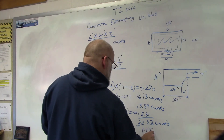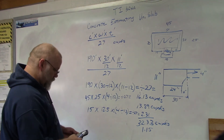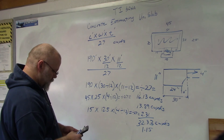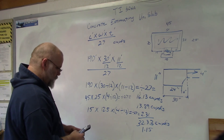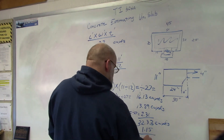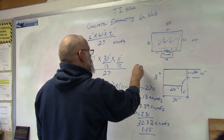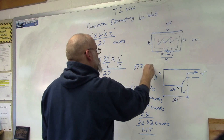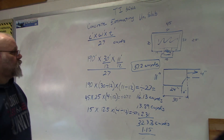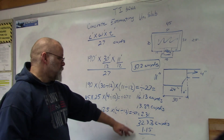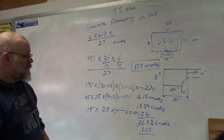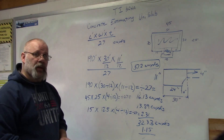Let's use 1.15 — so 15% for waste. 32.33 times 1.15 equals 37.3 cubic yards. We used 20% before and now we're only using 15%, so you can see the difference in the extra concrete that you would have.